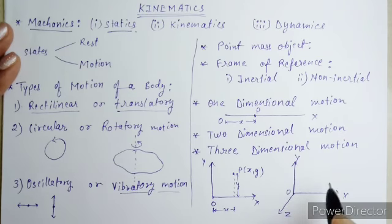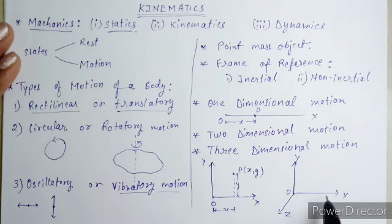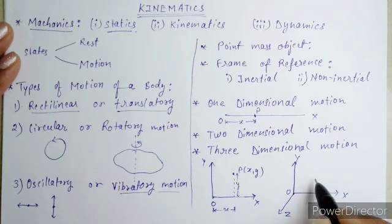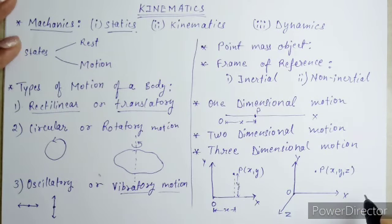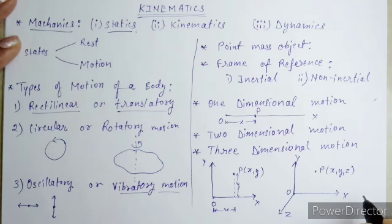Three-dimensional motion: the motion of an object is said to be three-dimensional if all three coordinates specifying the position of the object change with respect to time. That's all for today. We will be discussing motion in a straight line in the next class. Keep learning, keep growing — have a nice day!